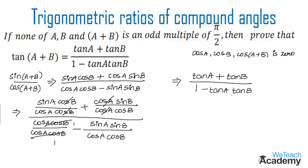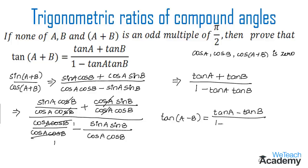This is the value on the RHS side. Hence we have proved that tan(a+b) is equal to tan a plus tan b divided by 1 minus tan a tan b. Similarly, we get the formula for tan(a−b), which is tan a minus tan b divided by 1 plus tan a tan b.